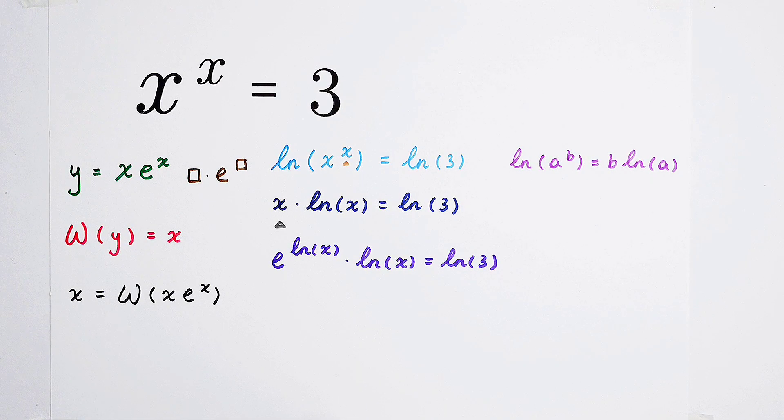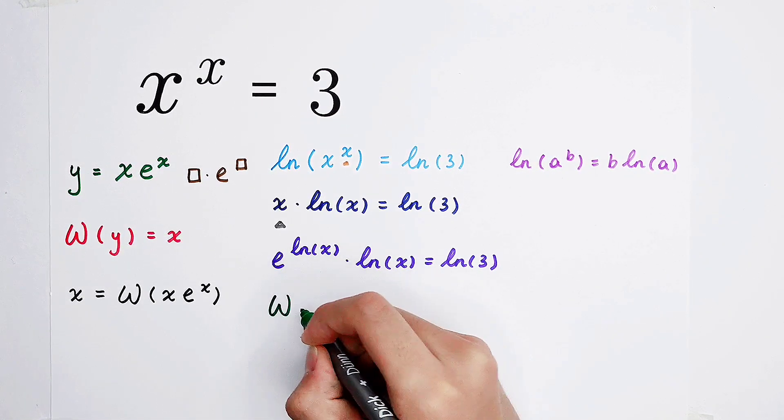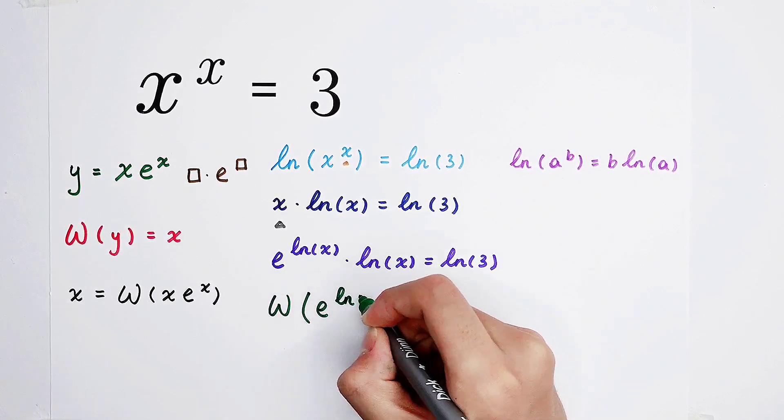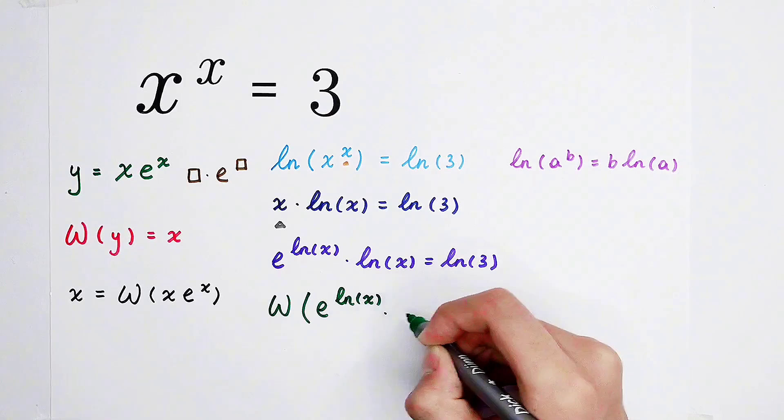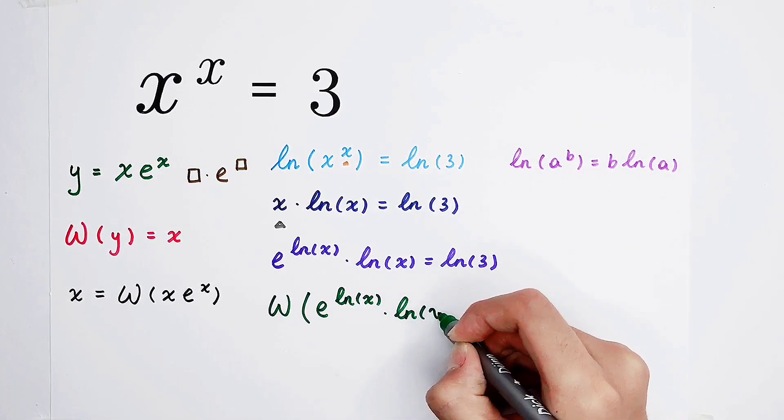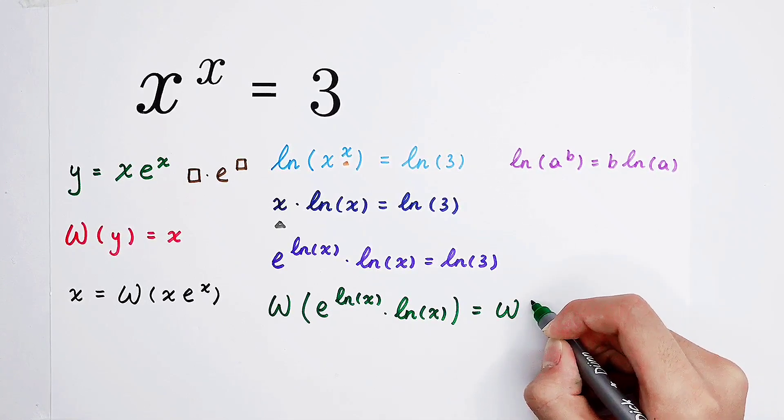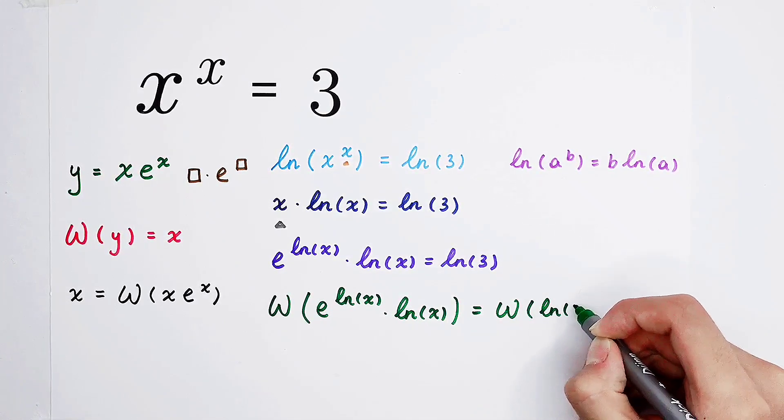We can take an inverse function on both sides, the Lambert W function. The left side is going to be W of e to the power of natural log of x times the natural log of x. And the right side is W of the natural log of 3.